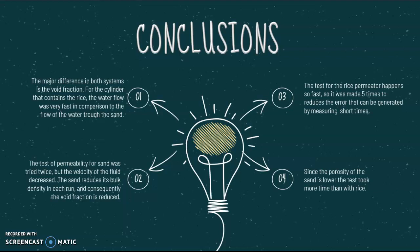Third, the test for the rice permeameter happened so fast, so it was made five times to reduce the error that can be generated by measuring short times.